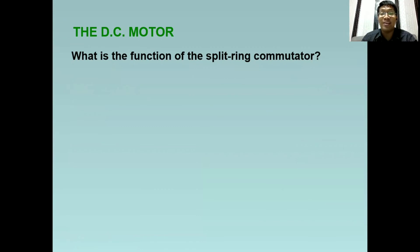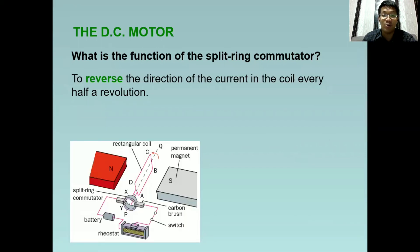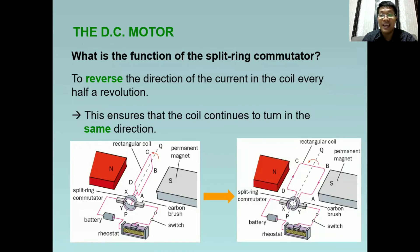What is the function of the split ring commutator? To reverse the direction of the current in the coil every half of the revolution. With the help of the split ring commutator, it will reverse the direction. What's the purpose? To ensure that the coil continues to turn in the same direction until it returns to the original position. That's one complete revolution, and this will happen continuously.